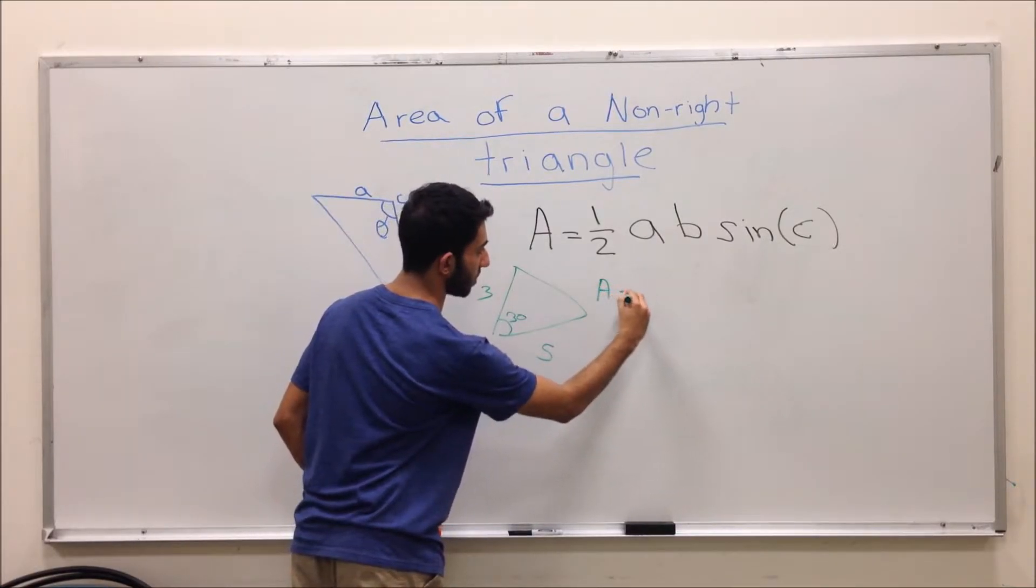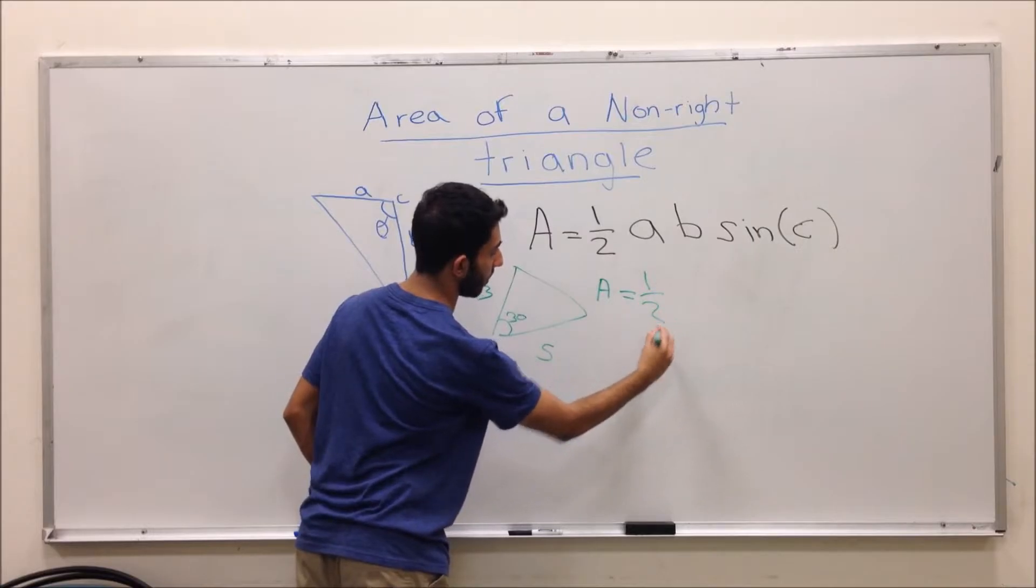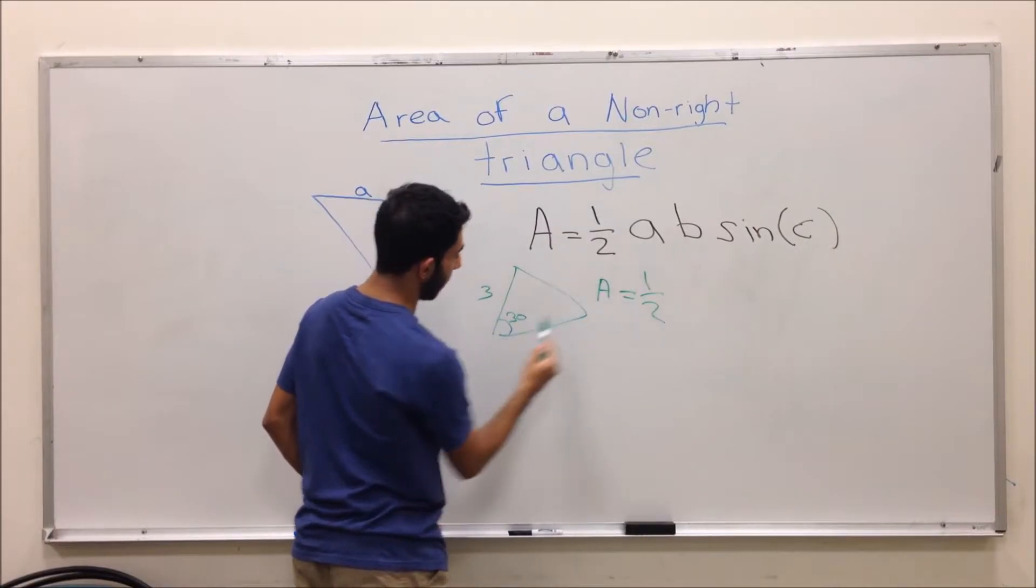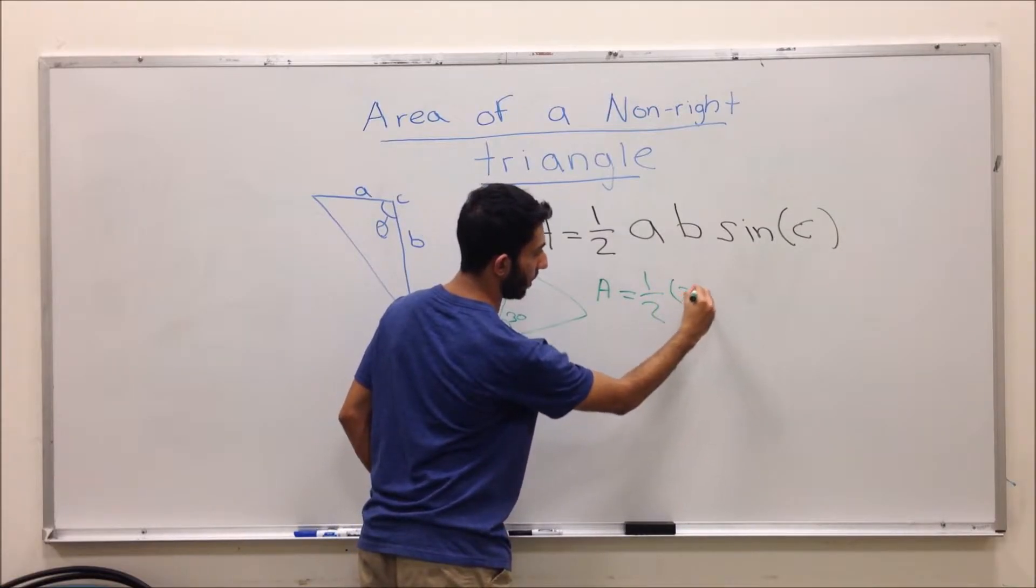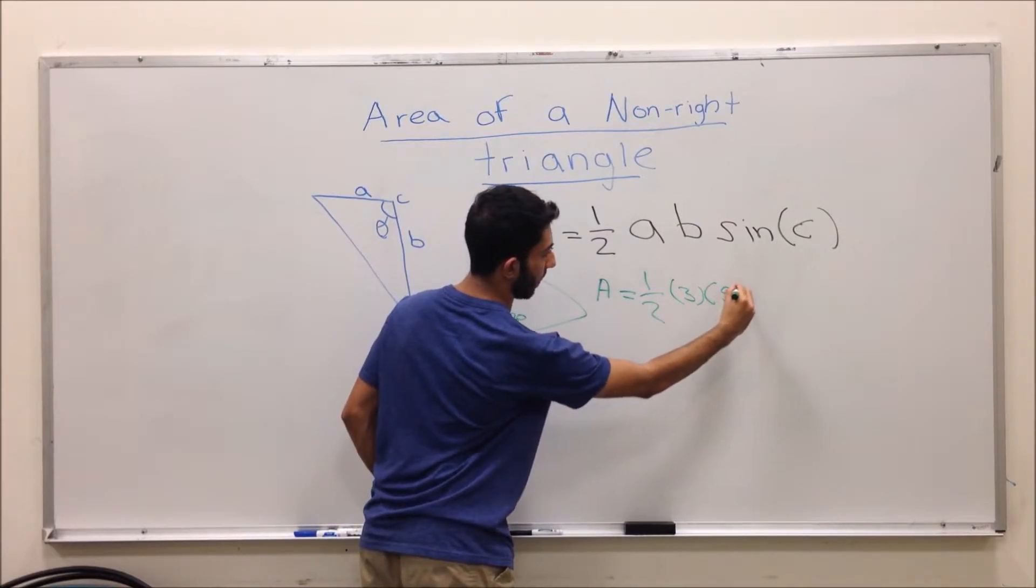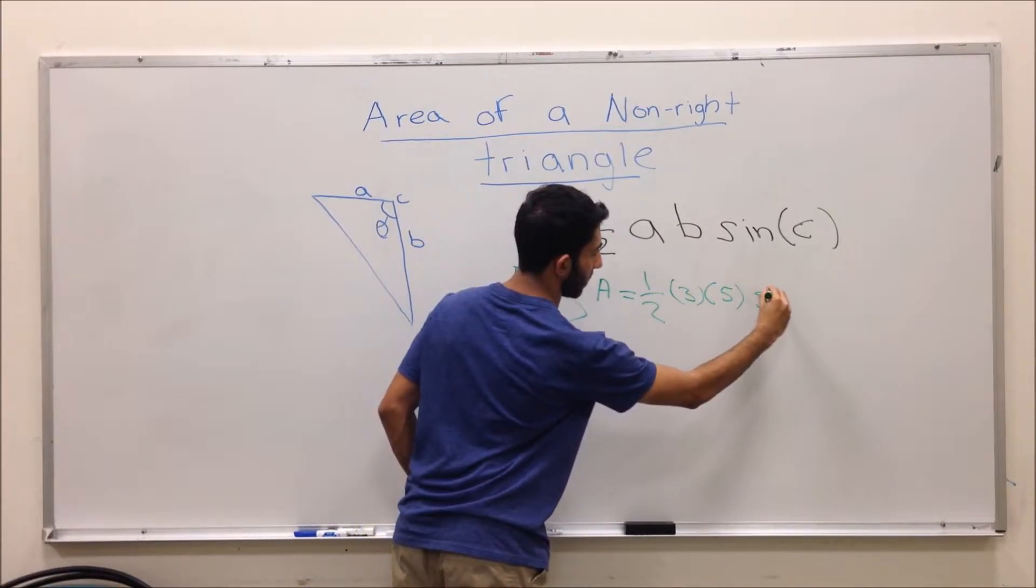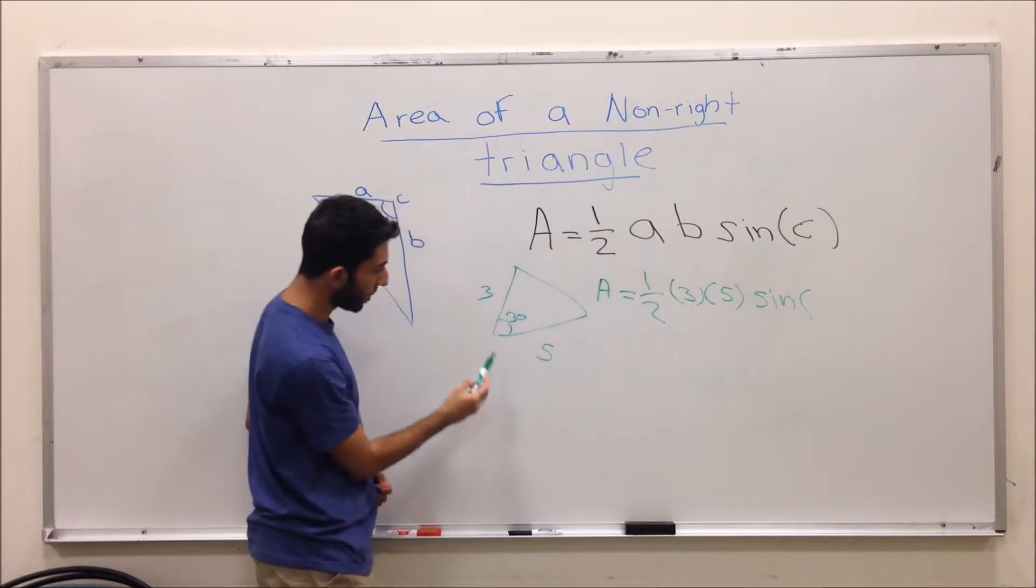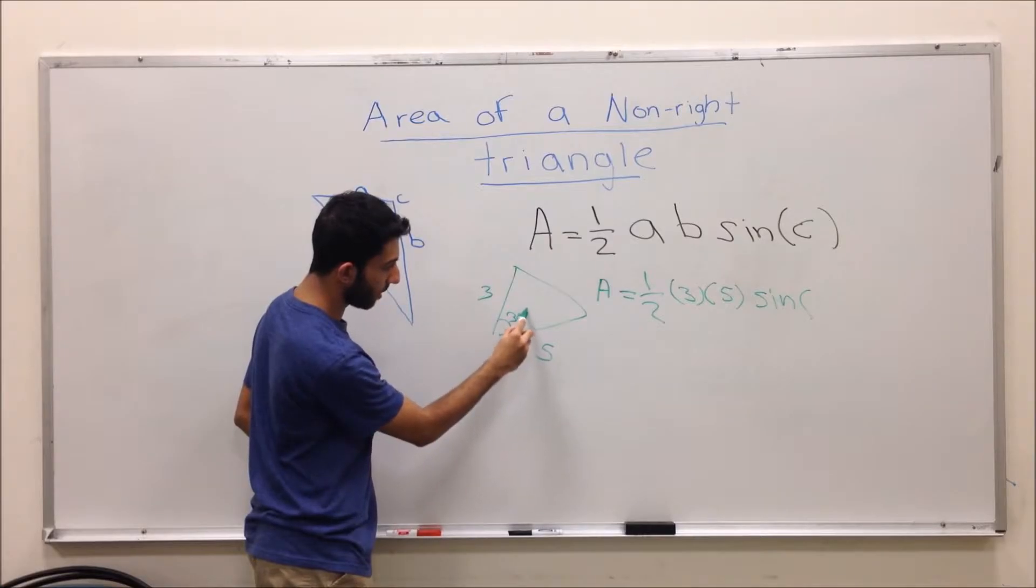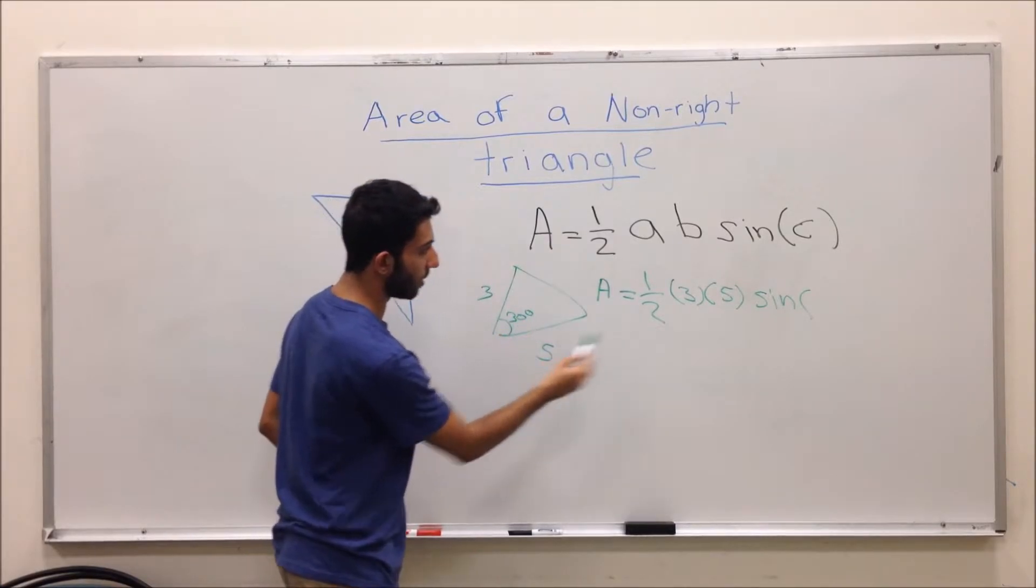you will do area equals one-half. The two sides that you have given are 3 and 5, and you take the sine of the angle between these two sides. So the angle between 3 and 5 is 30 degrees. So you bring the 30 here.